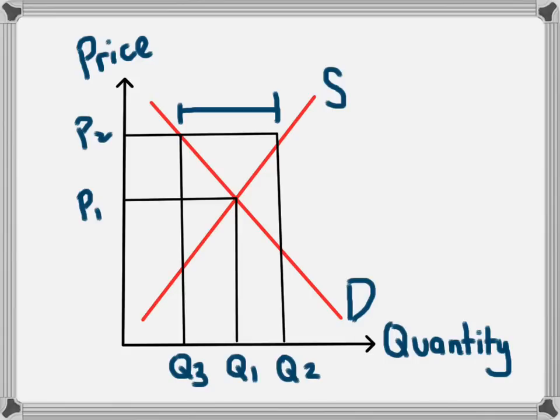In real life, for a business, this looks like too much stock on their floor. They have Q2 products on for sale, but only Q3 of them are being sold. Because businesses need to sell their product, they will decrease the price.